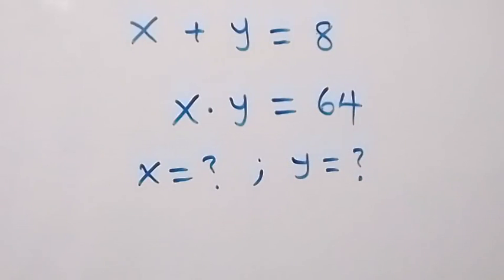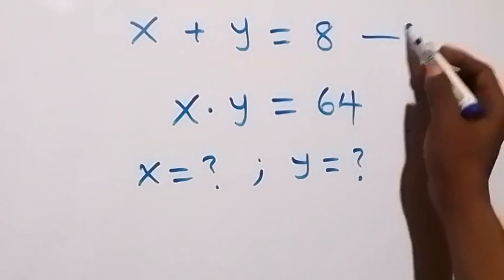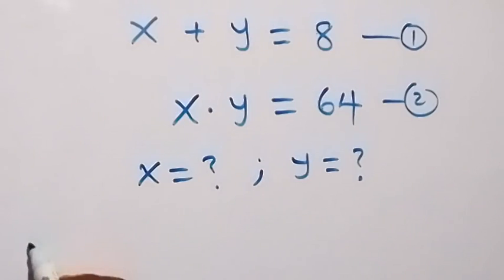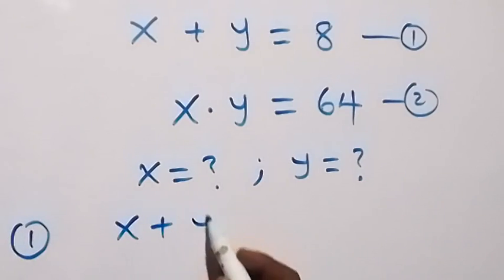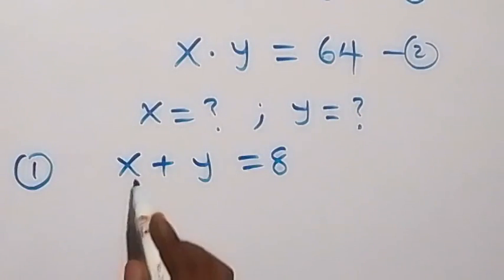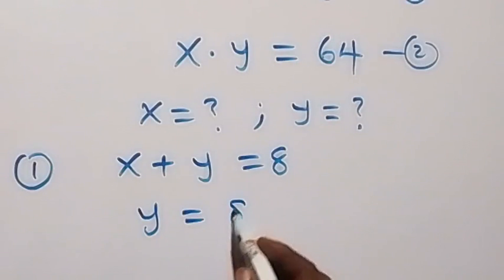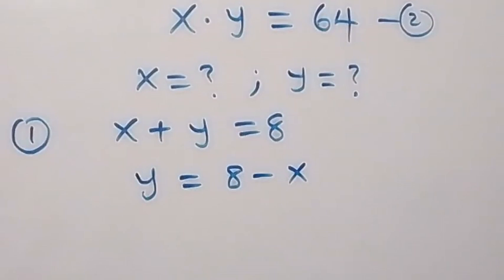Hello, you are welcome. We are solving these systems of equations. Let this be equation 1 and this equation 2. From here we are finding x and y. From equation 1 we have x plus y equals to 8, and taking x to the other side we can have y equals to 8 minus x.